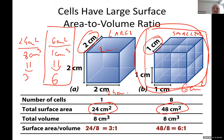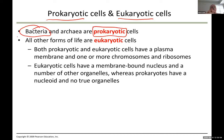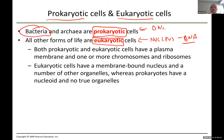Cells are divided into two kinds: prokaryotic and eukaryotic. Prokaryotic cells are bacteria — archaea and regular bacteria. Eukaryotic cells are all other cells, and they have one interesting feature: they contain a nucleus which contains DNA. For prokaryotic cells, DNA is just inside the cell but there is no enclosed nuclear membrane to store it.